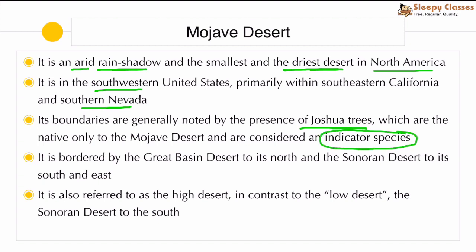Joshua trees are the indicator species of the Mojave Desert. Regarding its borders, the Great Basin Desert is located to the north of the Mojave Desert, and the Sonoran Desert is located to the south and southeast. The Mojave is also referred to as the 'high desert,' while the Sonoran Desert to the south is called the 'low desert.'